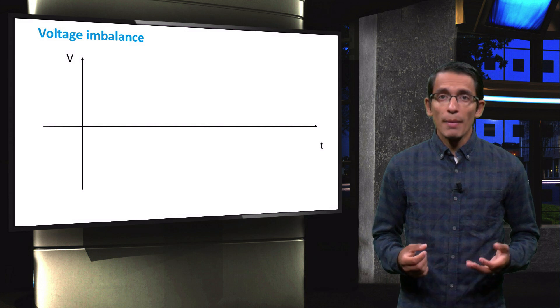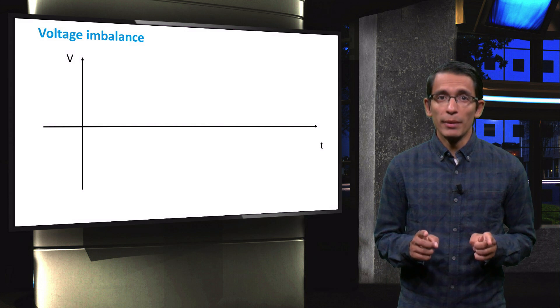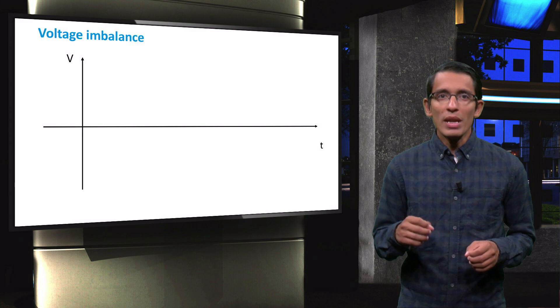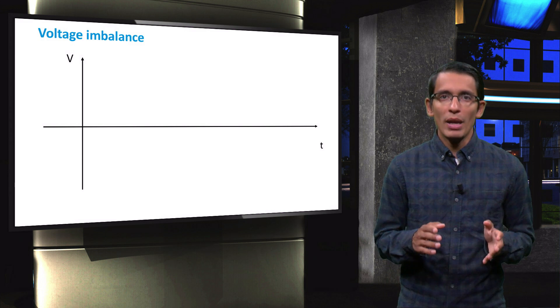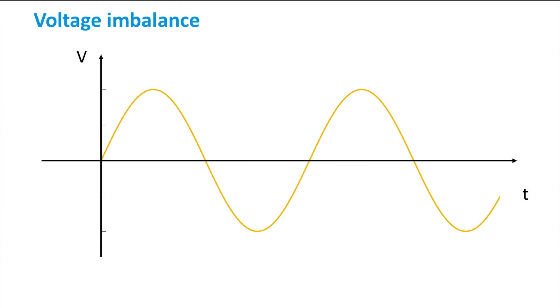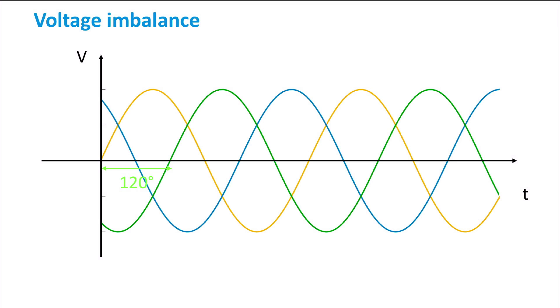Voltage imbalance may be a problem for the system's stability. To visualize a three-phase voltage system, we need a time domain and a voltage domain, in which sinusoidal voltage can be drawn. A single-phase system is composed of one sinusoid, and in the three-phase system, we have also a second and a third signal with a phase difference of 120 degrees between each phase.